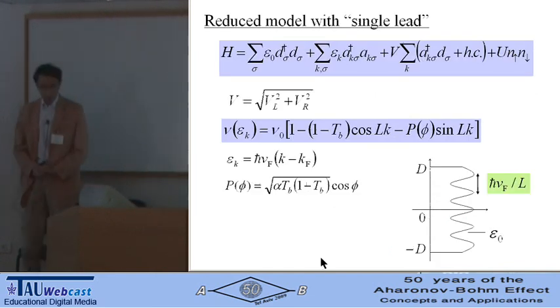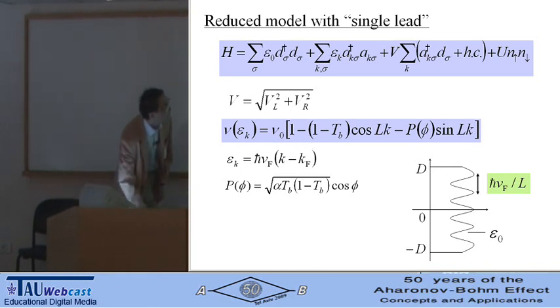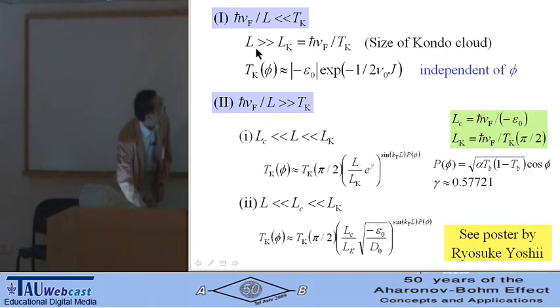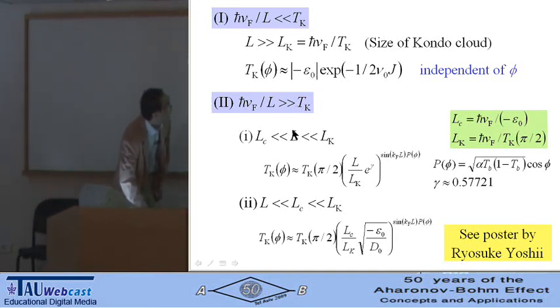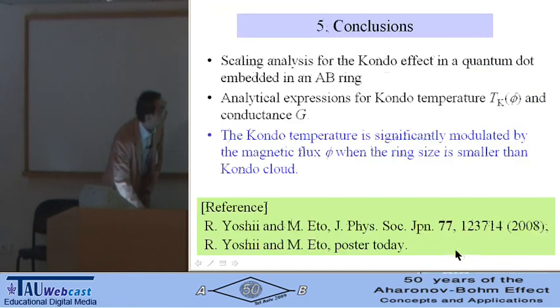First, we make the reduced model with single lead. In this case, density of states oscillates with this period, Fermi velocity over ring size. When this period is smaller than Tk, or ring size is much larger than the size of the Kondo cloud, Kondo temperature is independent of the magnetic flux. But otherwise, Kondo temperature depends on the magnetic flux. For the detail, please see the poster by Ryosuke today.